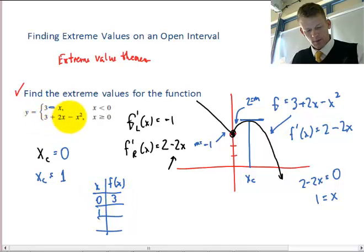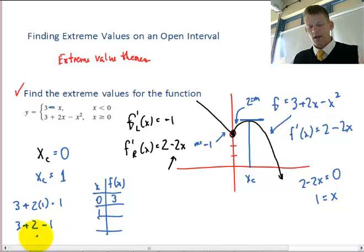So when I plug 0 into the function, I get 3. When I plug 1 into the function, I get, let me evaluate it, so 3 plus 2 times 1 minus 1 is going to be 3. 3 plus 2, I don't want to make a mistake on video, so that would be 4.